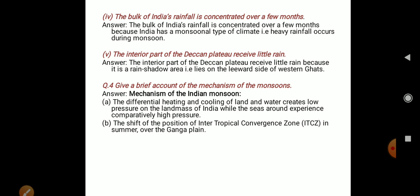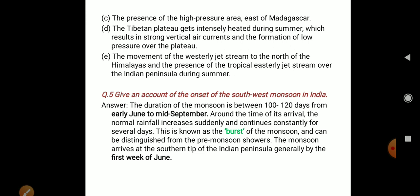The shift of the position of the Intertropical Convergence Zone (ITCZ) over the Ganga Plain in summer is a key factor. The presence of a high pressure area east of Madagascar also affects the Indian subcontinent. The Tibetan Plateau gets intensely heated during summer, resulting in strong vertical air currents and the formation of low pressure over the plateau.